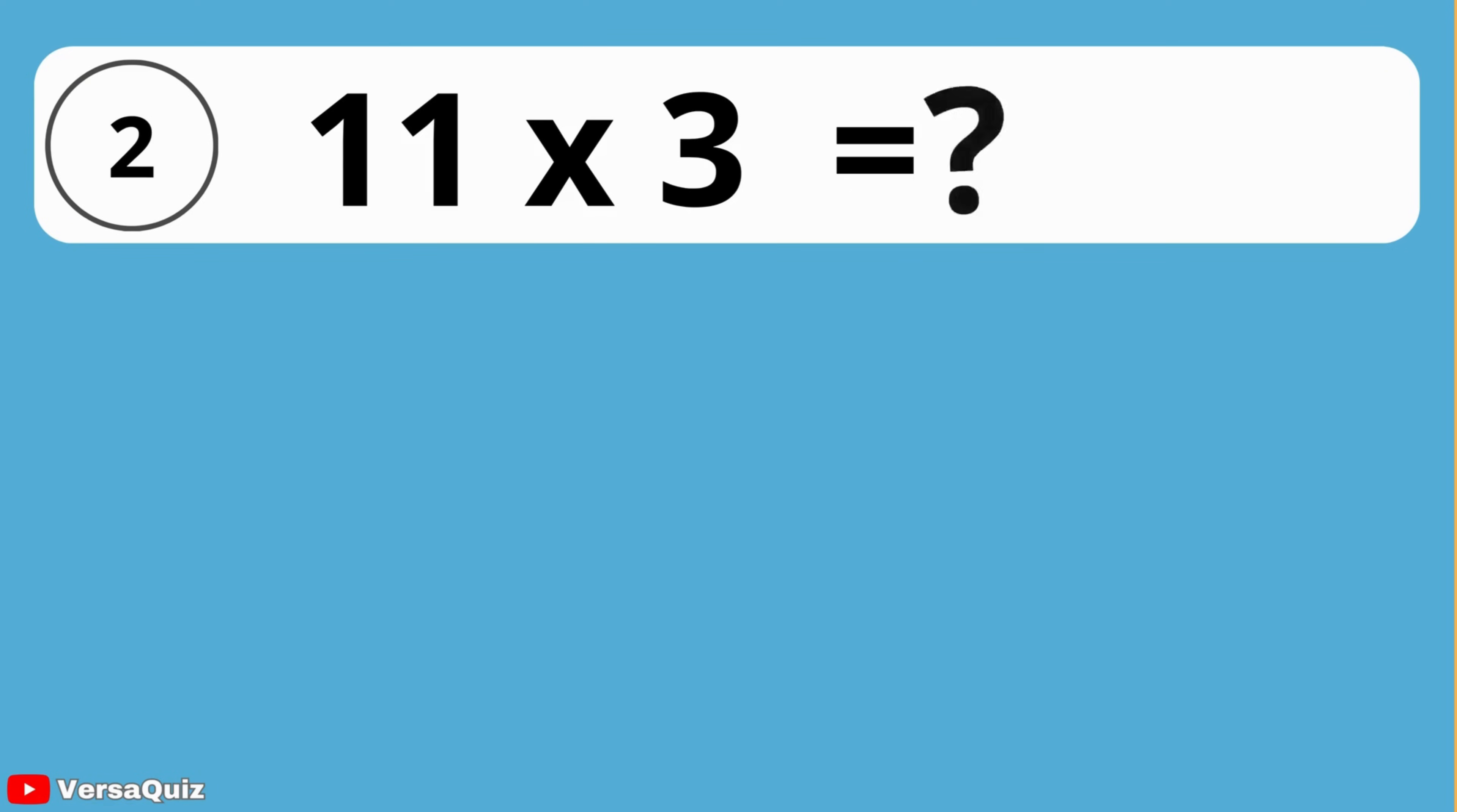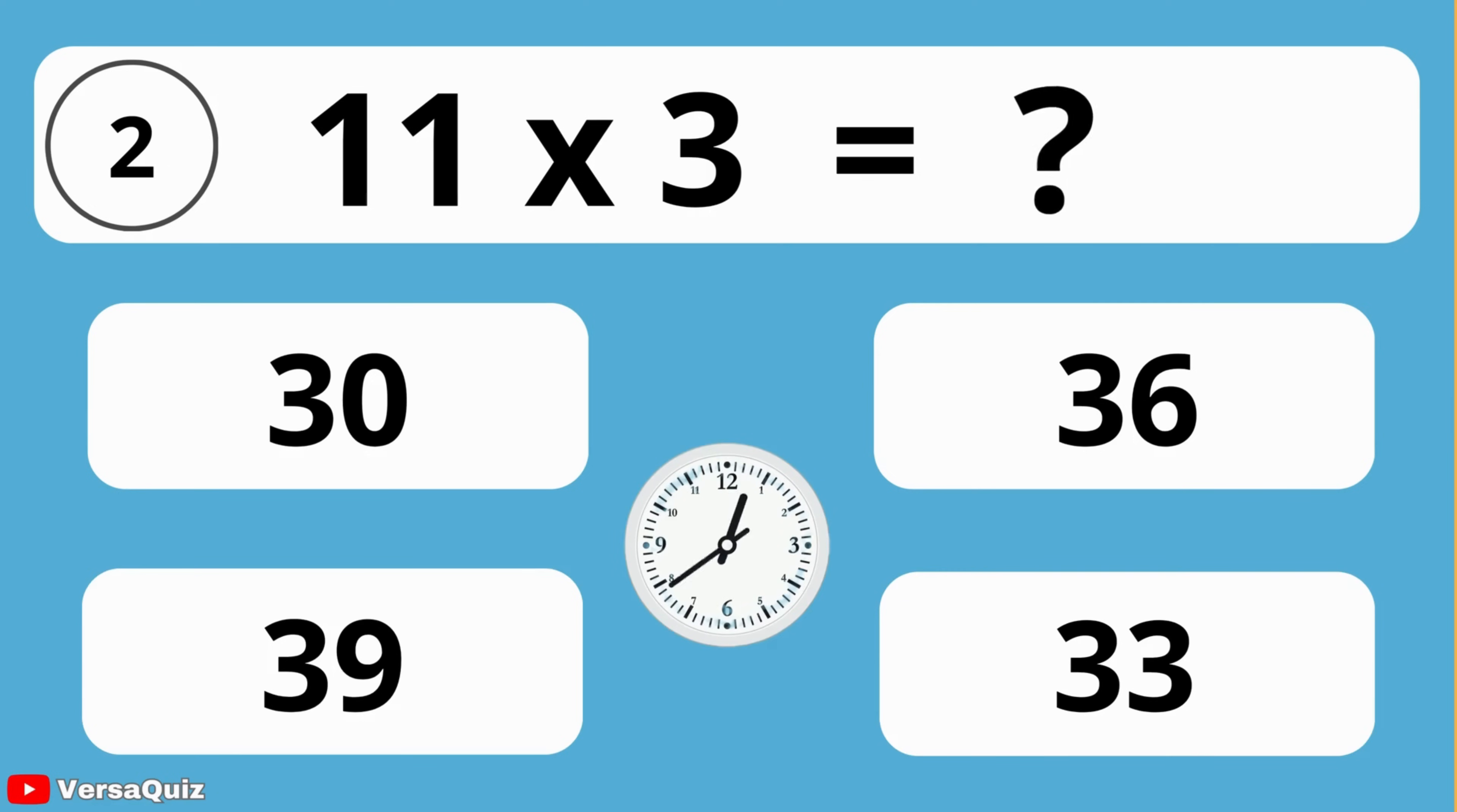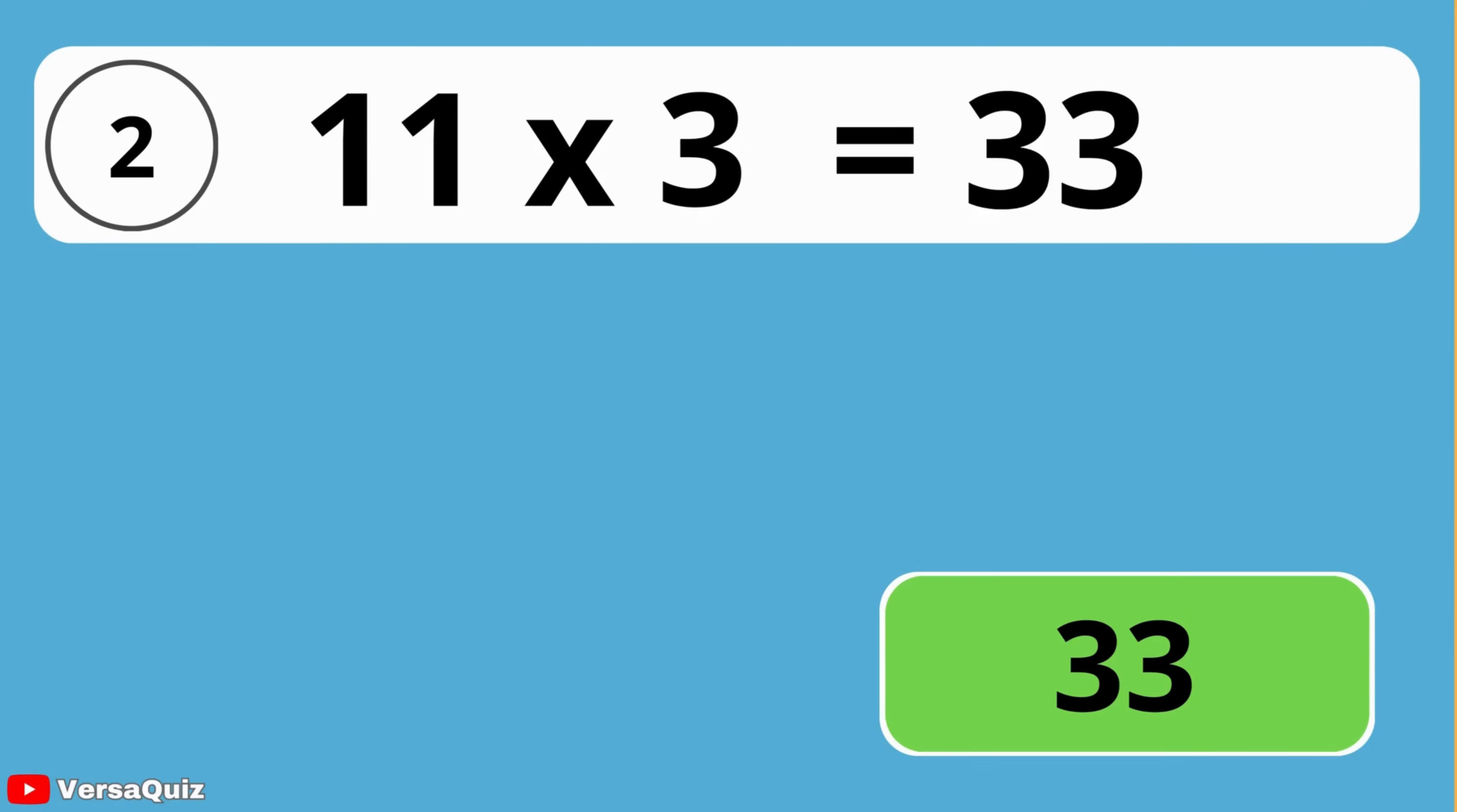What is the answer when you multiply 11 and 3? 30, 36, 39, or 33? The answer is 33. Multiplying 11 by 3 gives you 33.